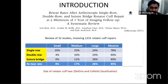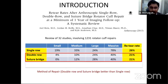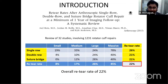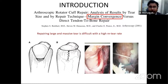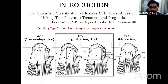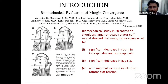Studies show that size of the rotator cuff tear significantly affects re-tear rates at one-year follow-up, as does the method of repair. One study reported an overall re-tear rate in the 20% range, higher with massive tears and with single-row repair. Margin convergence, largely popularized by Burkhart, helps decrease tear size and facilitates repair of large and massive tears, but must be selected carefully — only for specific tear patterns.